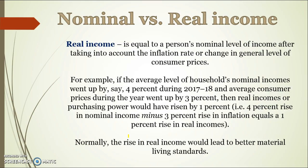Real income is a better measure of our purchasing power. It's equal to a person's nominal income after taking into account inflation or changes in the general level of prices. For example, if a household's nominal income went up by 4%, but average prices went up by 3%, then that family's real income has gone up by 1%. So for your real income to increase, your wage or income needs to increase by a faster rate than the rate of inflation. If your income increases by 2% and inflation goes up by 4%, then your real income has actually gone down. Real income is a much better measure of our purchasing power and material living standards because it measures whether we can afford to buy more goods and services.